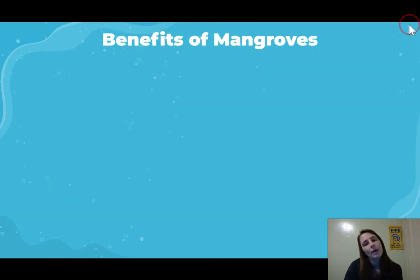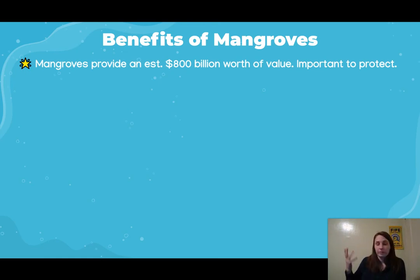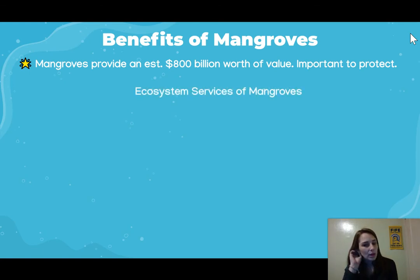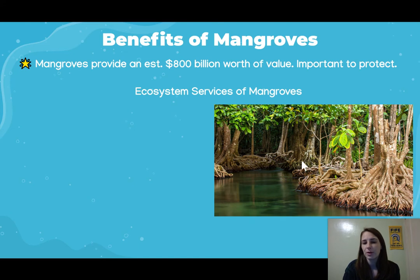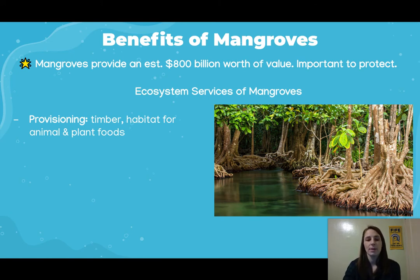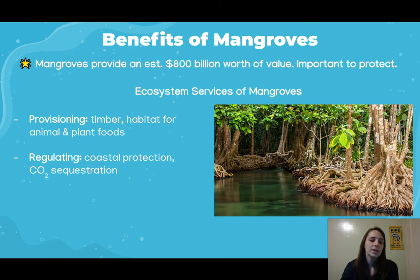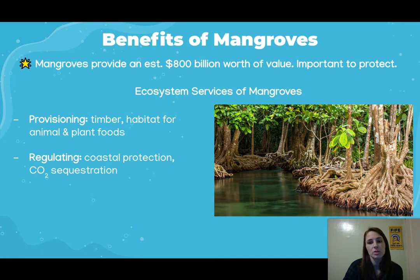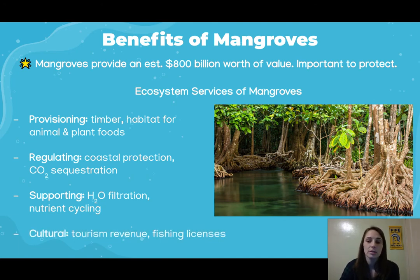Now shifting to mangroves — mangroves are very beneficial and important to protect, providing an estimated 800 billion dollars worth of value. Mangroves have long tap roots that go down into the water and thrive with changing tide levels. Provisioning services include timber and habitat for animals and plants we eat. Regulating services include coastal protection as a buffer from tides and waves, and carbon sequestration. Supporting services include water filtration and nutrient cycling. Cultural services include tourism revenue and fishing licenses.